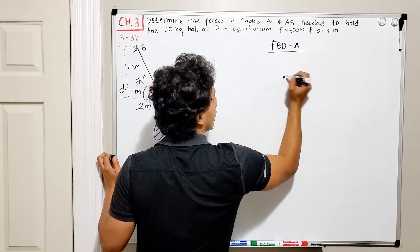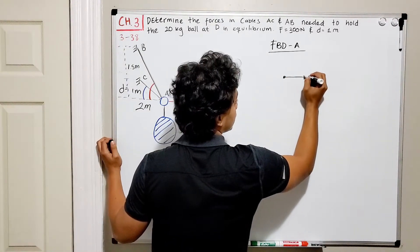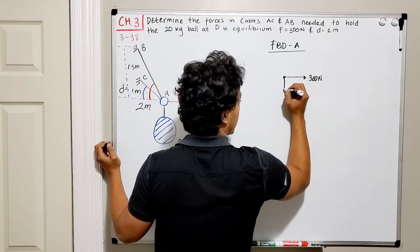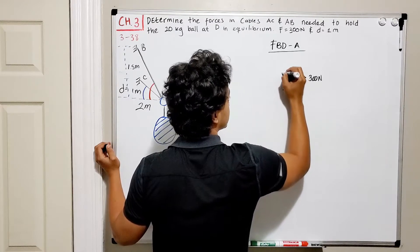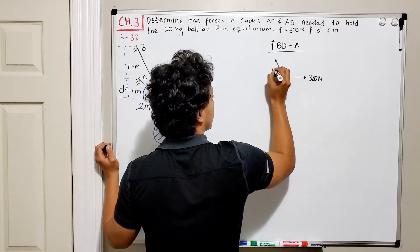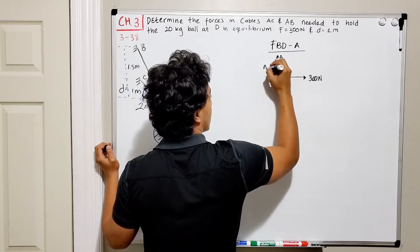this is my point A, so we will have 300 newtons going to the right. We will have the weight going down, and we will have two cables going up. So we have that cable AB, and this is AC.